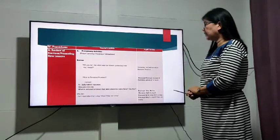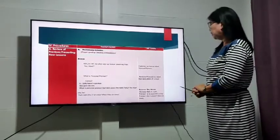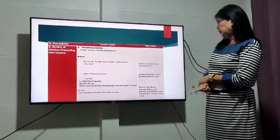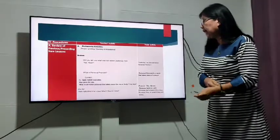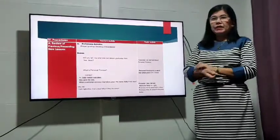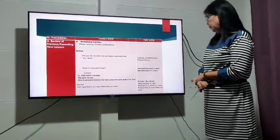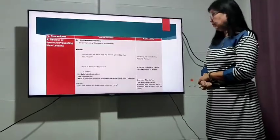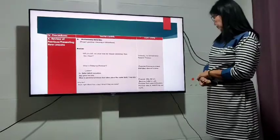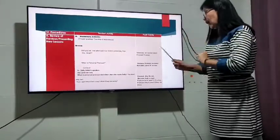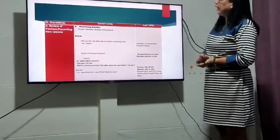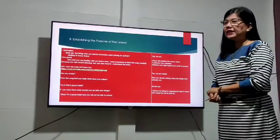Will you tell me what was our lesson yesterday? Yesterday we learned about personal pronouns. Very good. What is personal pronoun? Personal pronoun is a word that takes place of a noun. Correct. Example: Sally baked cupcakes. She give me one. What is personal pronoun that takes place the name Sally? Pronoun she, ma'am. Why she? Because Sally is a girl. Okay, that's right. What if he is a boy? Pronoun he is used if it's a boy. Very good. What if they are many? Pronoun they is used if they are many.